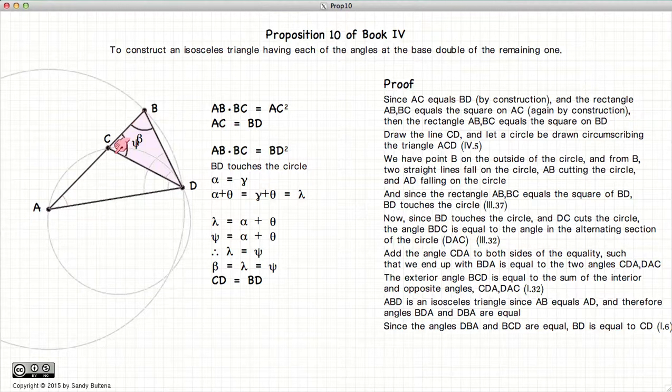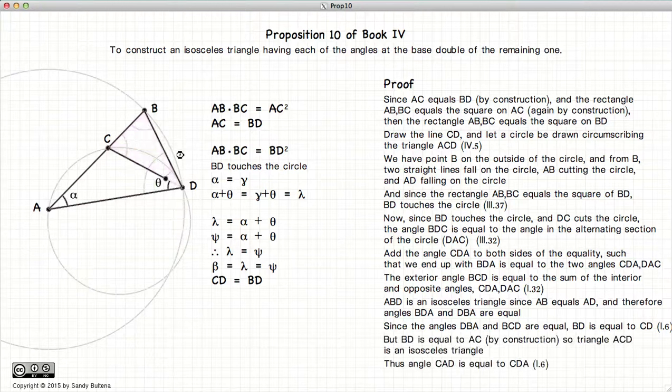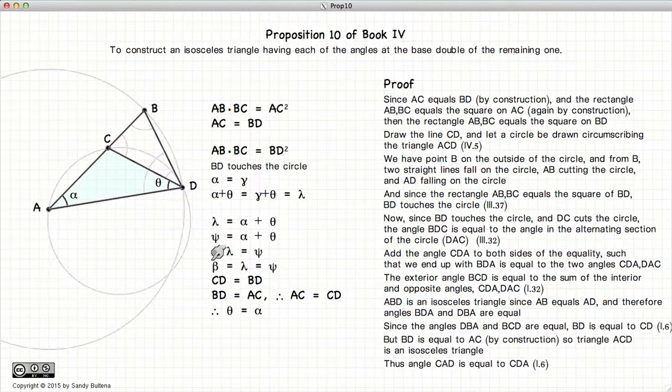Let's look at this little triangle here, BCD. Beta is equal to phi, which means that it is an isosceles triangle and CD is equal to BD. Now, since CD is equal to BD and BD is equal to AC, remember that was by construction, we have that CD equals BD equals AC, or in other words, AC is equal to CD.